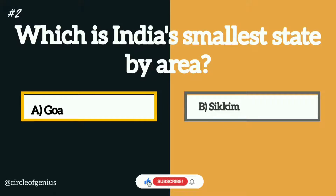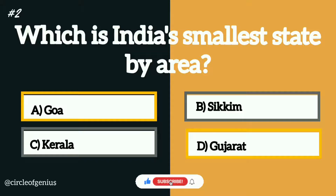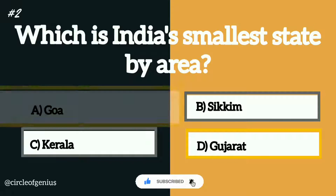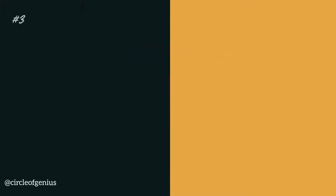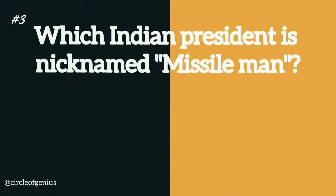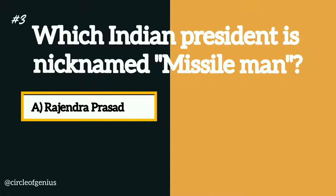Question number two: which is India's smallest state by area? Option A: Goa, B: Sikkim, C: Kerala, D: Gujarat. The correct answer is option A, Goa.